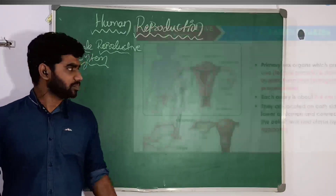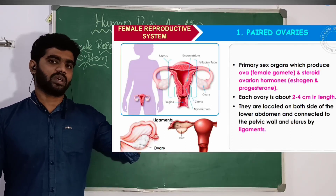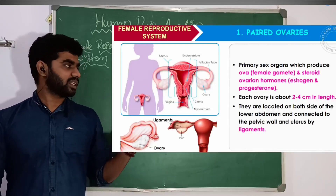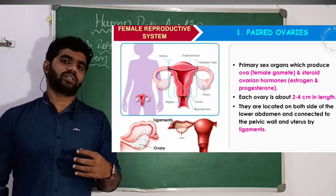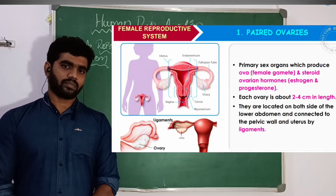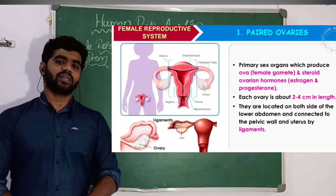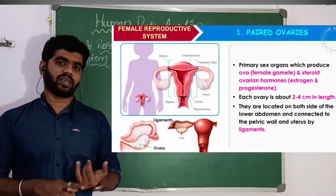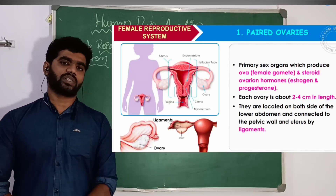First we will take up the ovaries. Ovaries are called the primary sex organs. Primary sex organs are the ones which produce female gametes — that is the egg or ovum. The second function is to produce ovarian steroid hormones, which are progesterone and estrogen. That is why they are called primary sex organs.